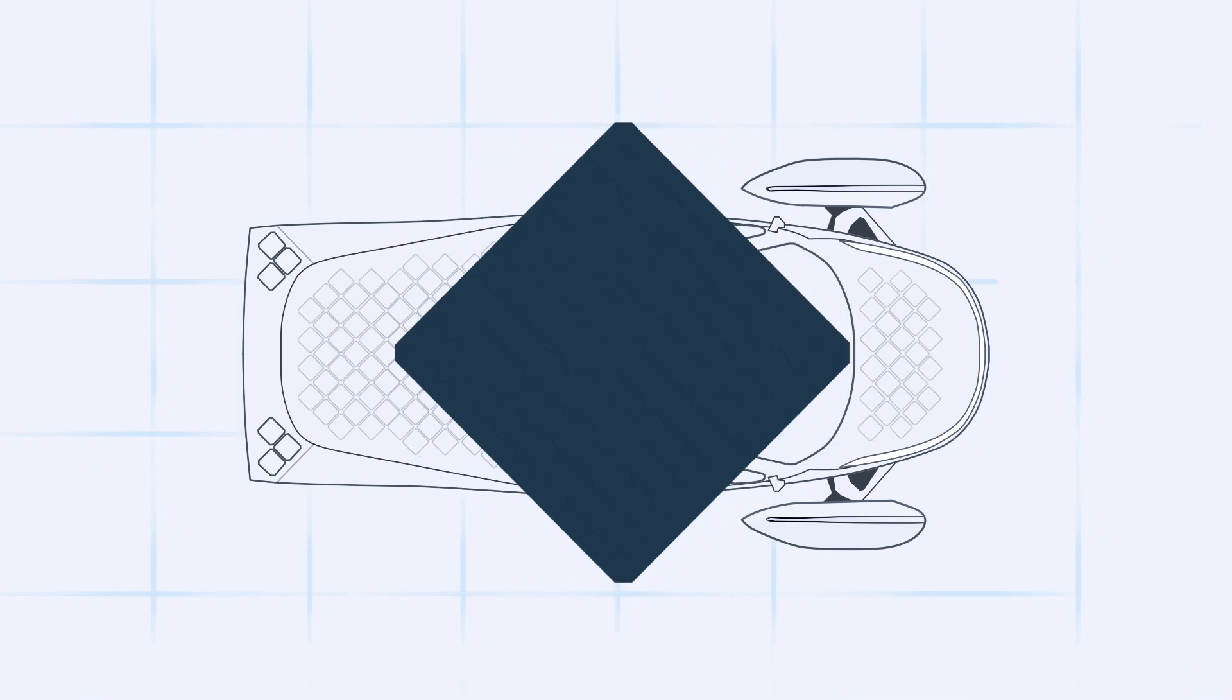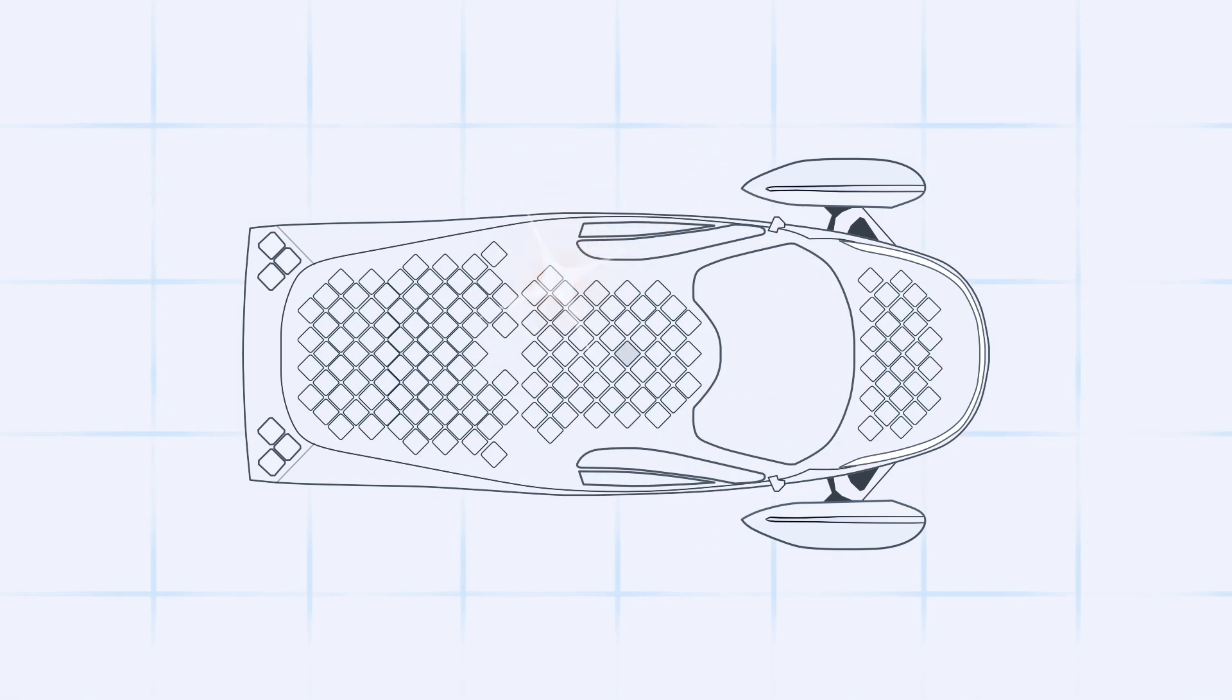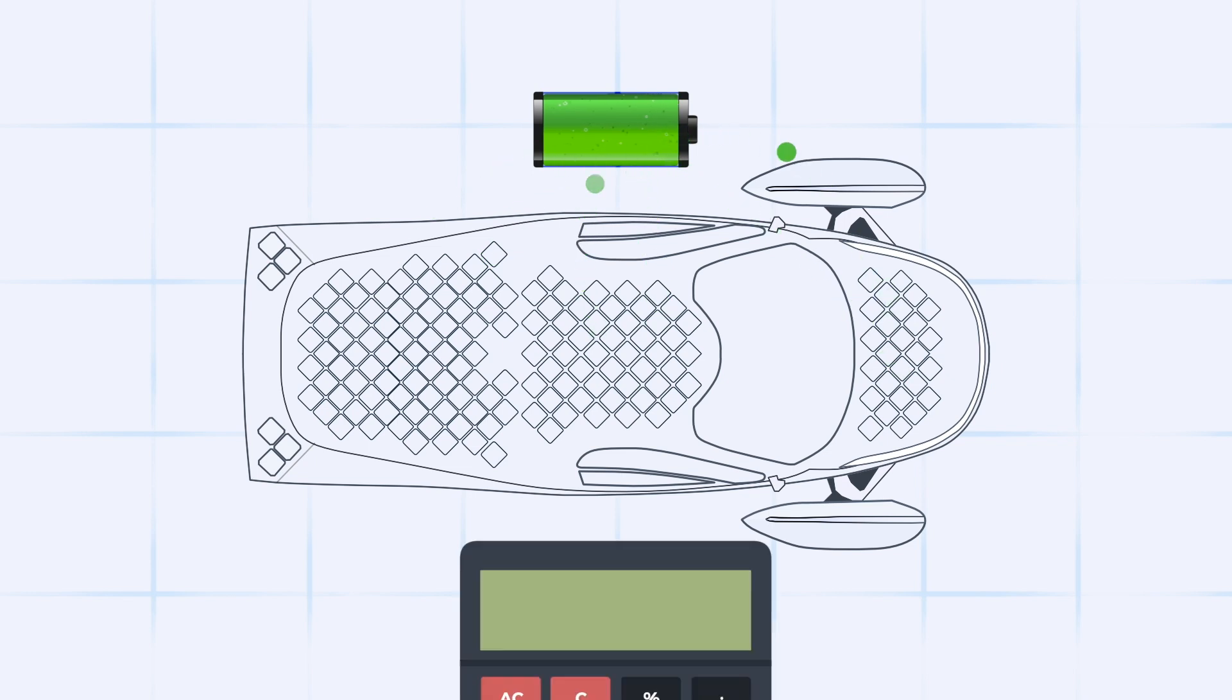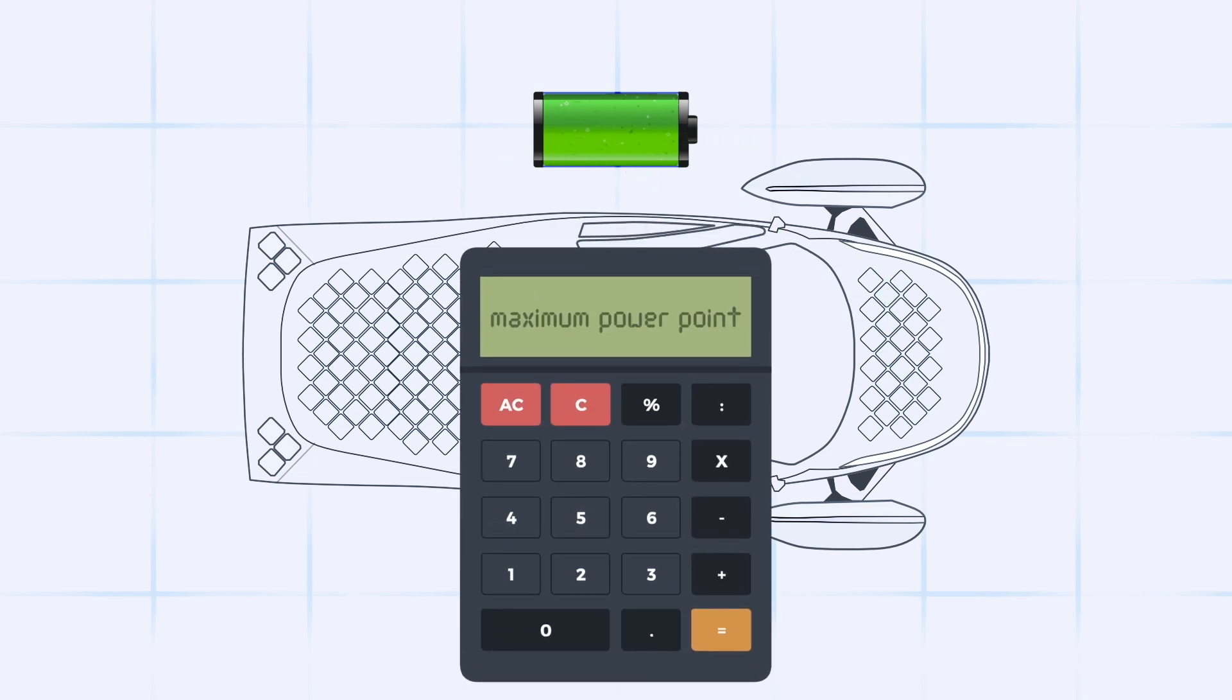It's no secret, Aptera has many solar cells exposed to the sun at once. But how do we get the most power output at all times? By calculating the maximum power point.